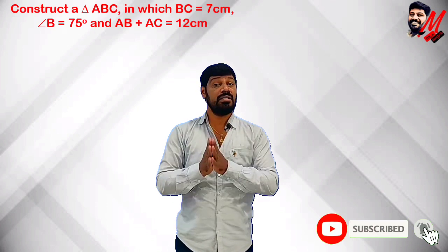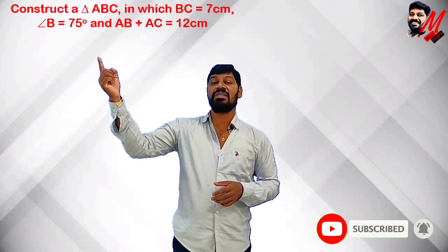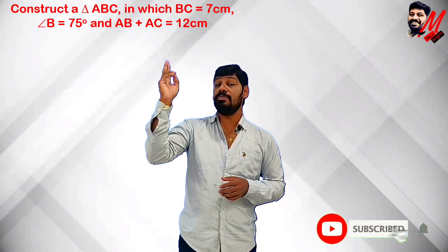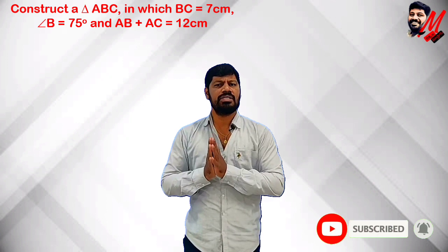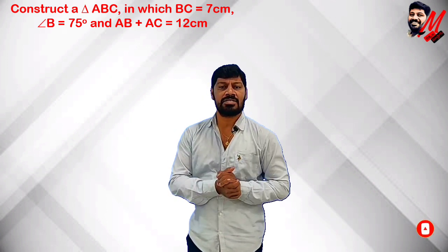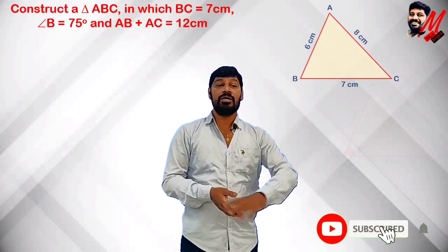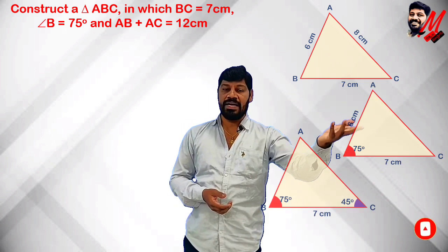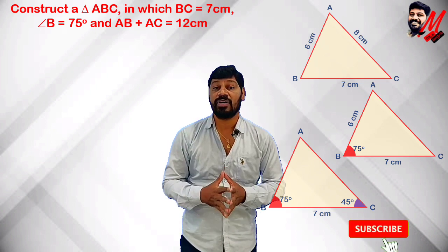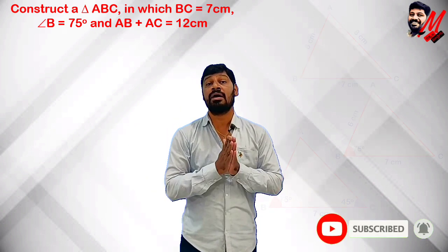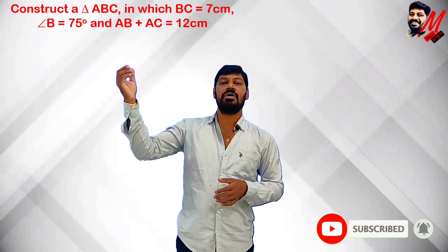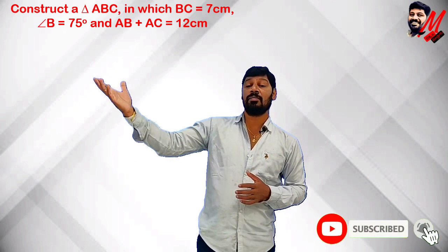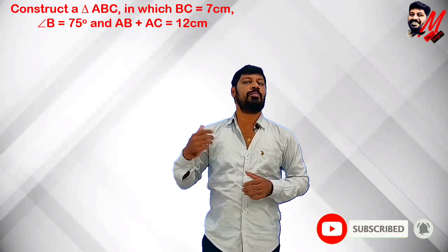Now, construct a triangle ABC in which BC is equal to 7 cm, angle B is equal to 75 degrees, and AB plus AC is equal to 12 cm. Normally we construct triangles with all three sides, or two sides and an angle. Here we have one side, one angle, and the sum of the other two sides — this is a completely different type of construction. Let's start with the problem.